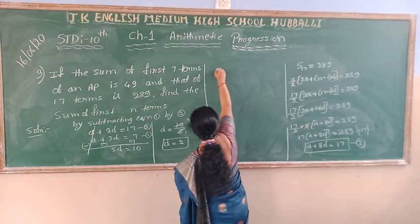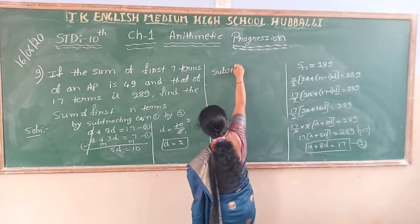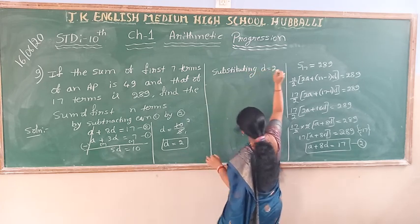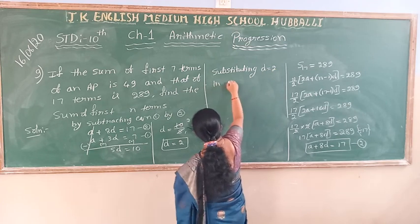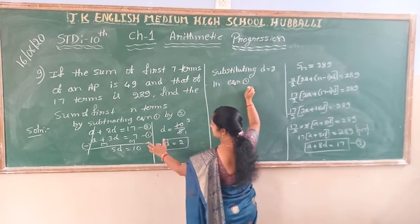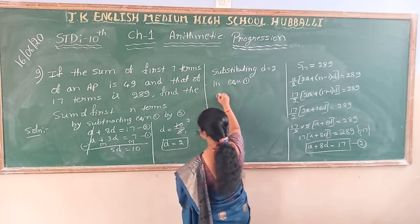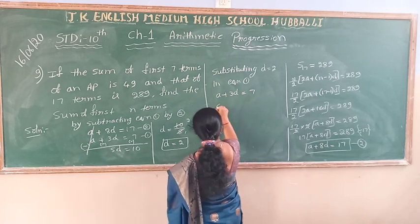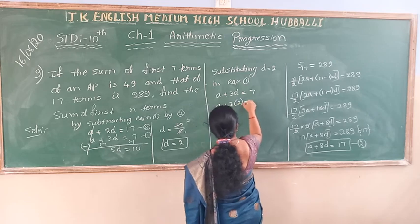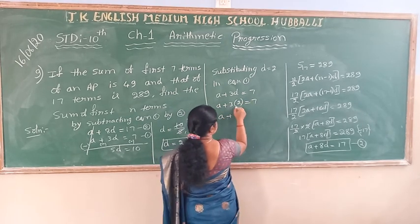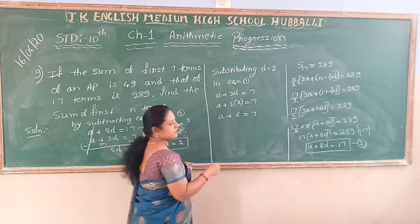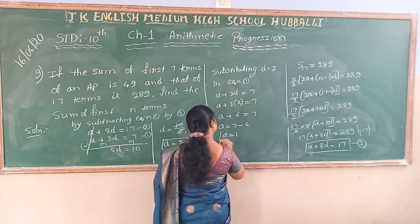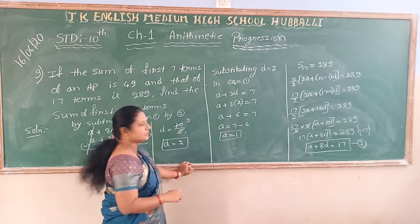Substituting D is equal to 2 into equation 1: A plus 3 into 2 is equal to 7. That is A plus 6 is equal to 7, so A value is 7 minus 6, which gives A is equal to 1. So I have found A is equal to 1 and D is equal to 2.